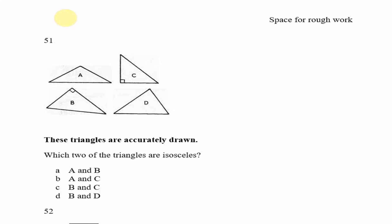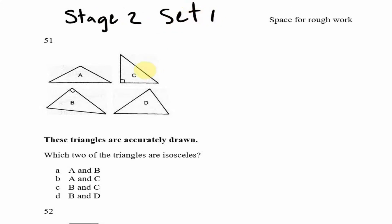Welcome guys to this another video. Today we want to pick up from where we left off in our last video — we want to complete from question 51 through to 60, the final 10 questions on the paper. We're working on the Stage 2 Set 1 City and Guilds math past paper. Before we get into the video, don't forget to hit that like button and subscribe to the Chris Maths Academy.